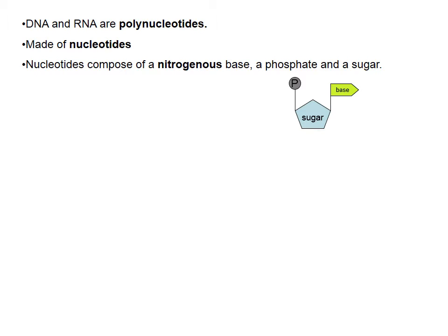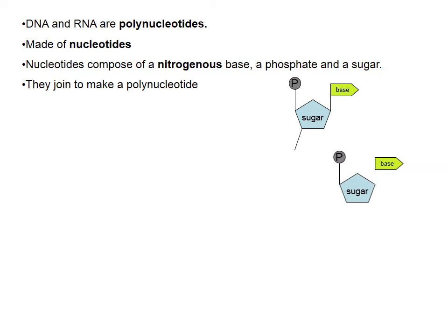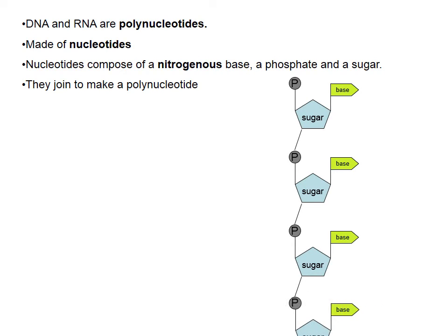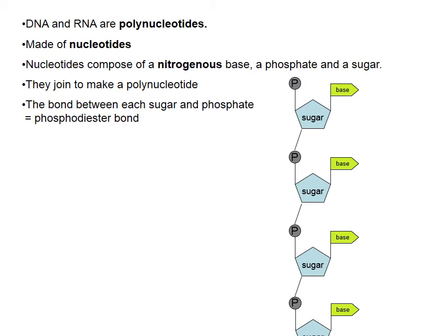It's a sugar you've already come across in biomolecules. These monomers — nucleotides — join to make a polynucleotide, and they join between the phosphate and the sugar: phosphate, sugar, phosphate, sugar, phosphate, sugar. This is called the phosphate-sugar backbone, and the bond formed is called a phosphodiester bond — another bond that you need to know.